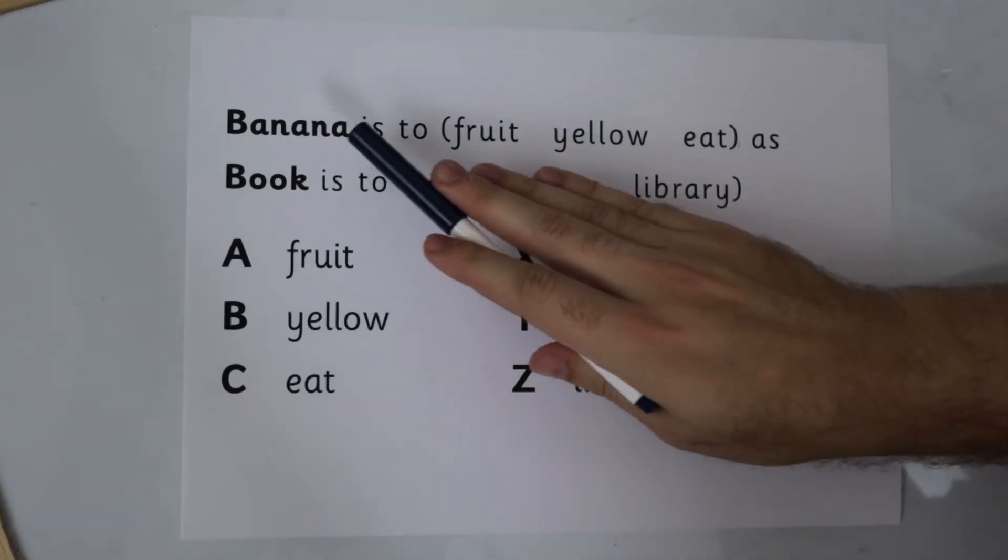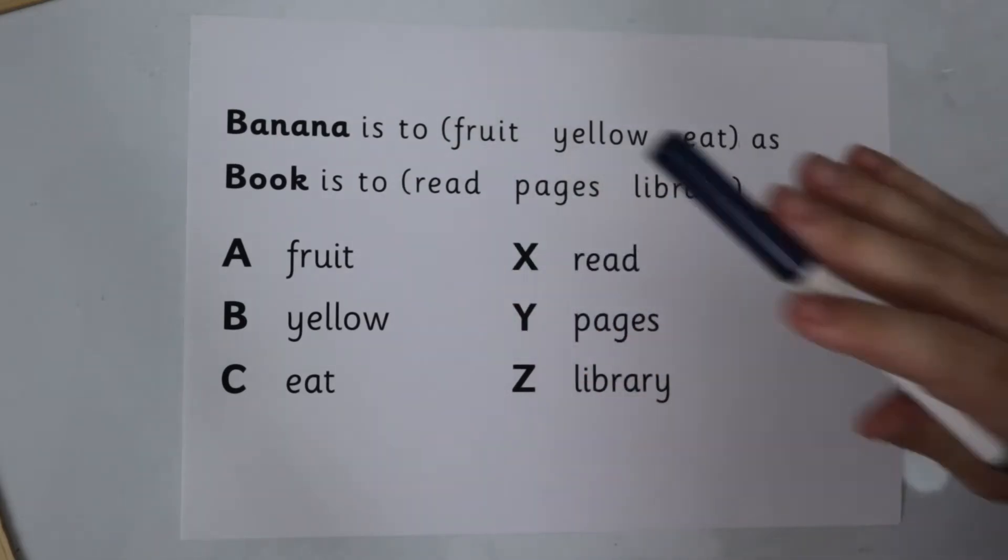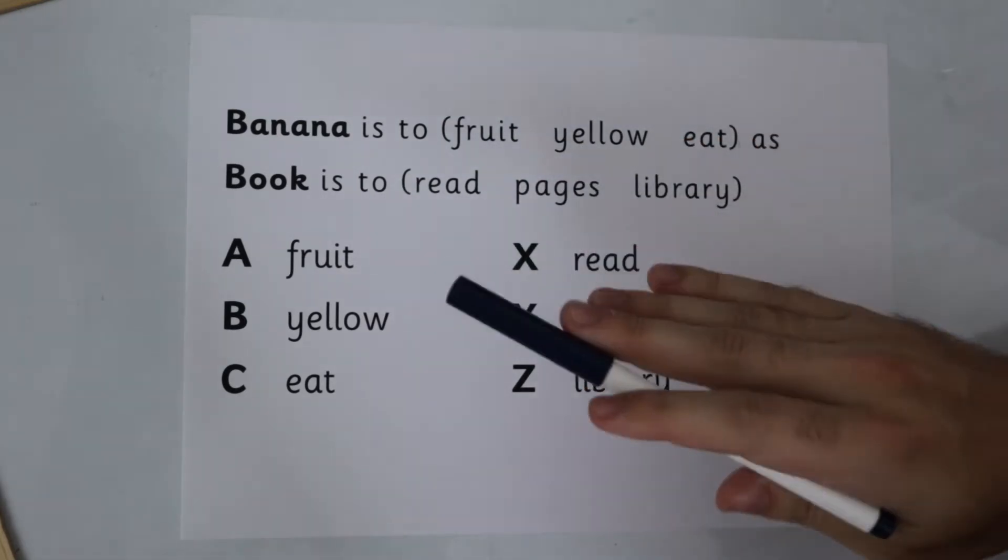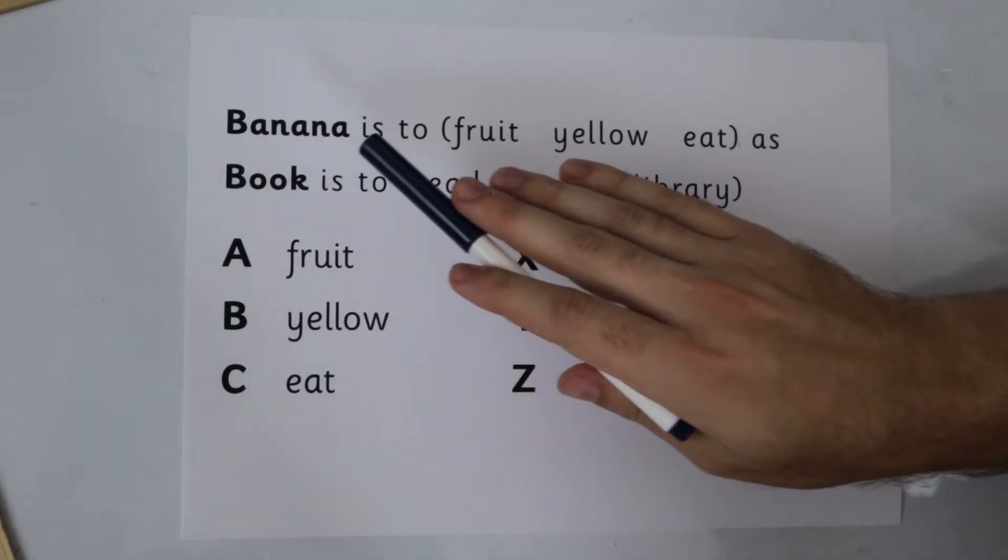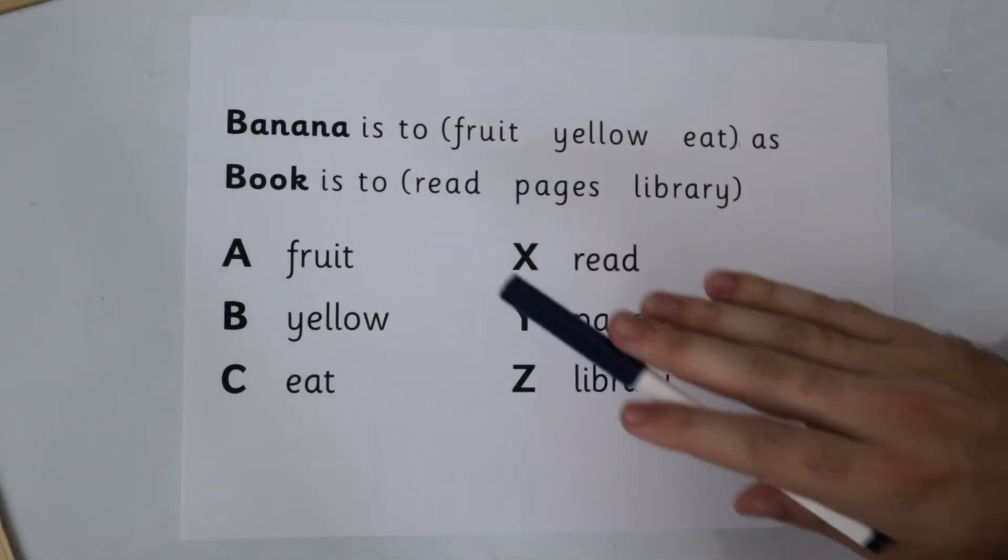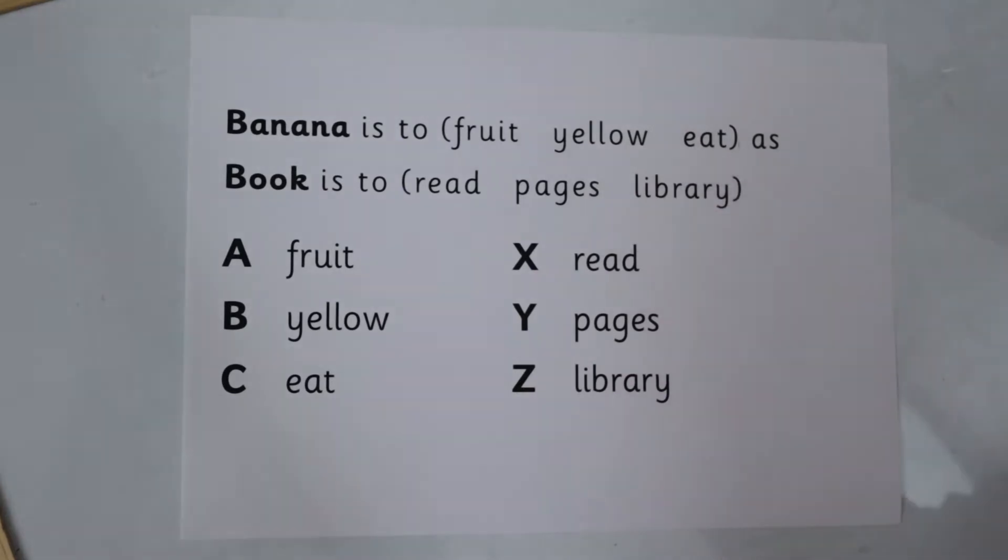In this type of question our job is to complete this sentence in the best way possible. The way to go about this is to look at the words you're given, banana and book, and then start to systematically work your way through the possible options.